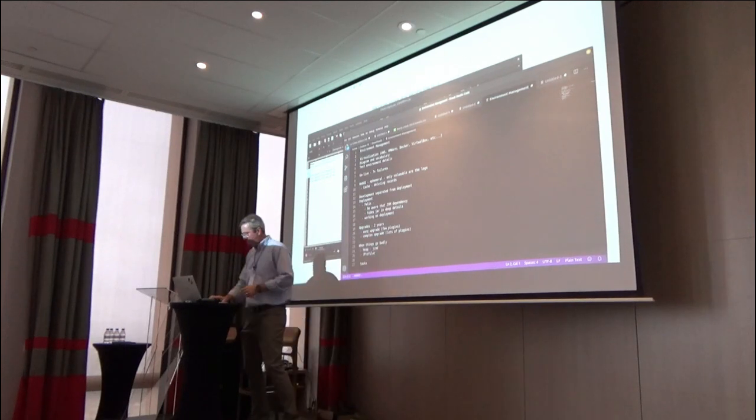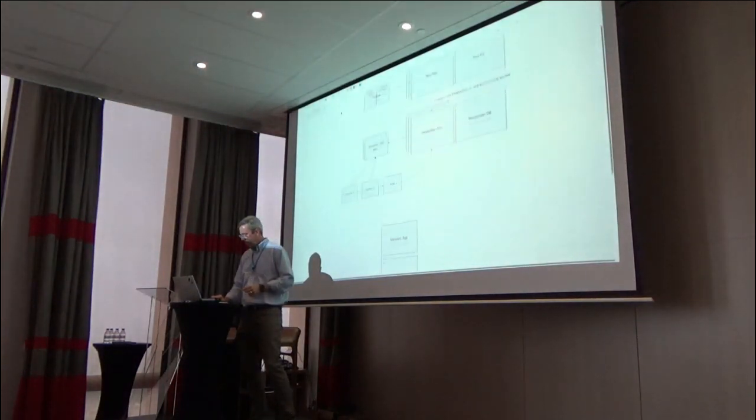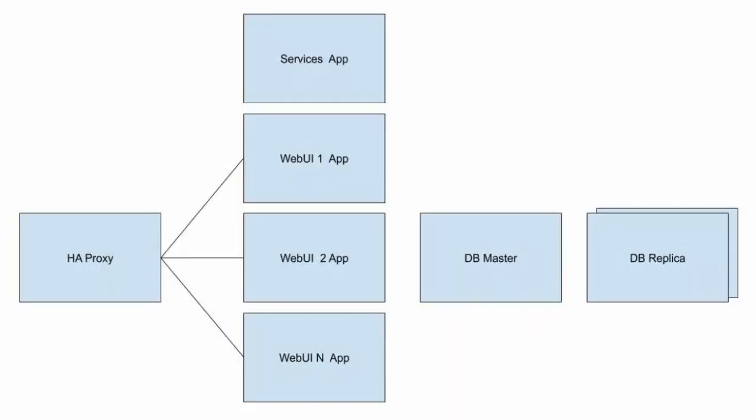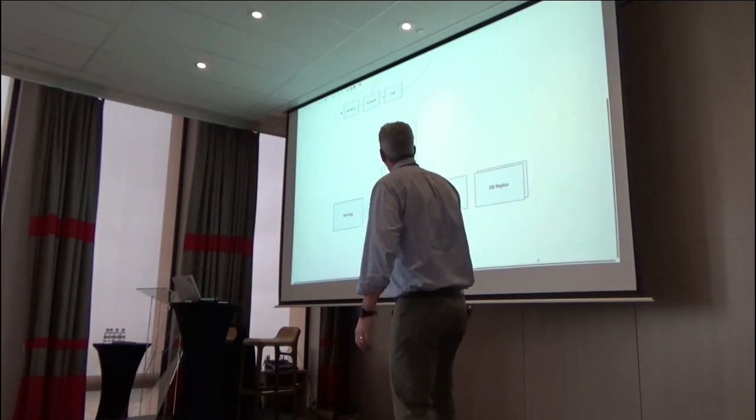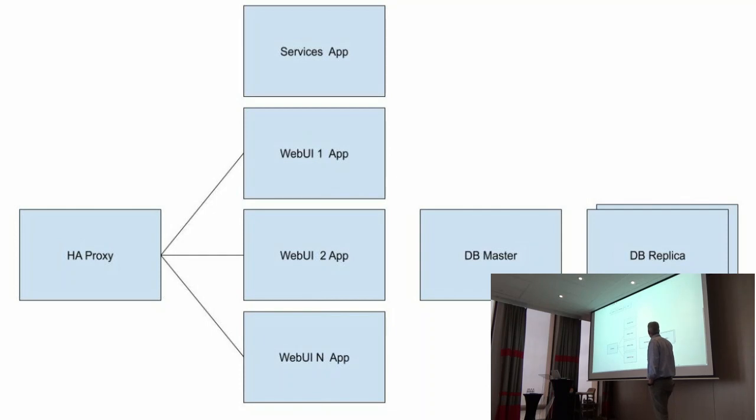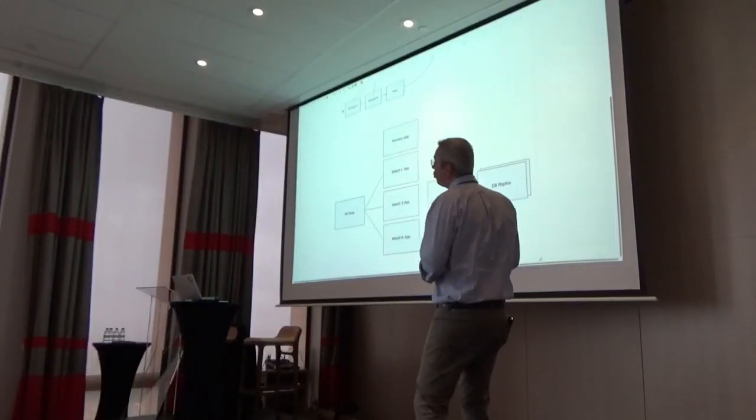The next thing I want to talk about is a typical environment. So, we've gone through the evaluation process. We've gone through the mock go lives and all the scenario testing. The system is now live, and it's working well. What does a typical live system look like? For me, this is three out of five times what I typically use. I have an HA proxy, load balancing, multiple web UIs. Three are typically the minimum. I don't think I've ever gone above four. And then I have a services application server that's not behind the HA proxy, and this is the one that's nominated to run all your processes, your accounting engine and stuff like that.